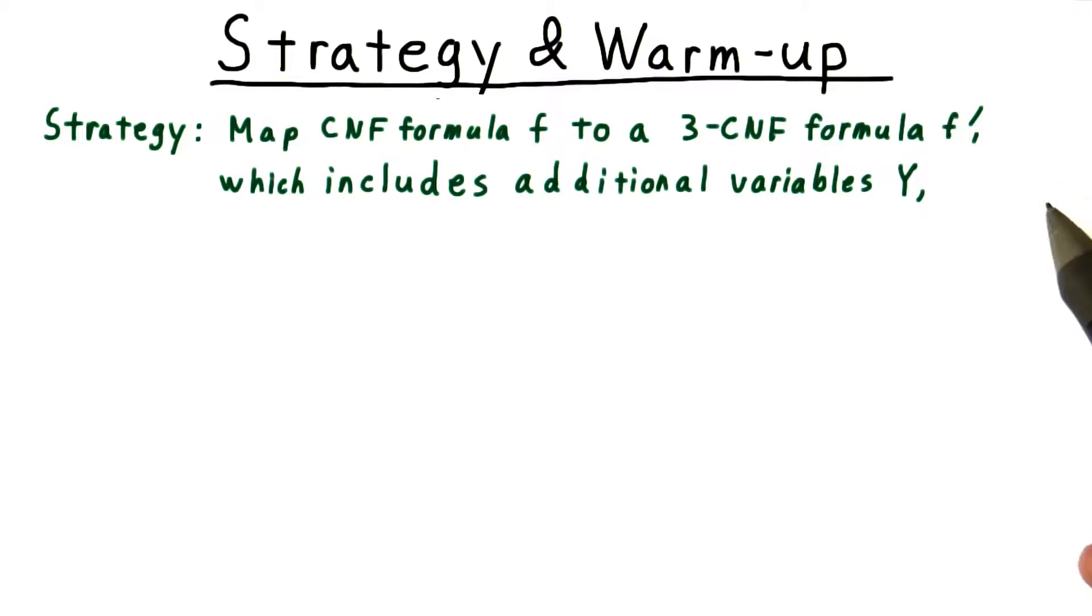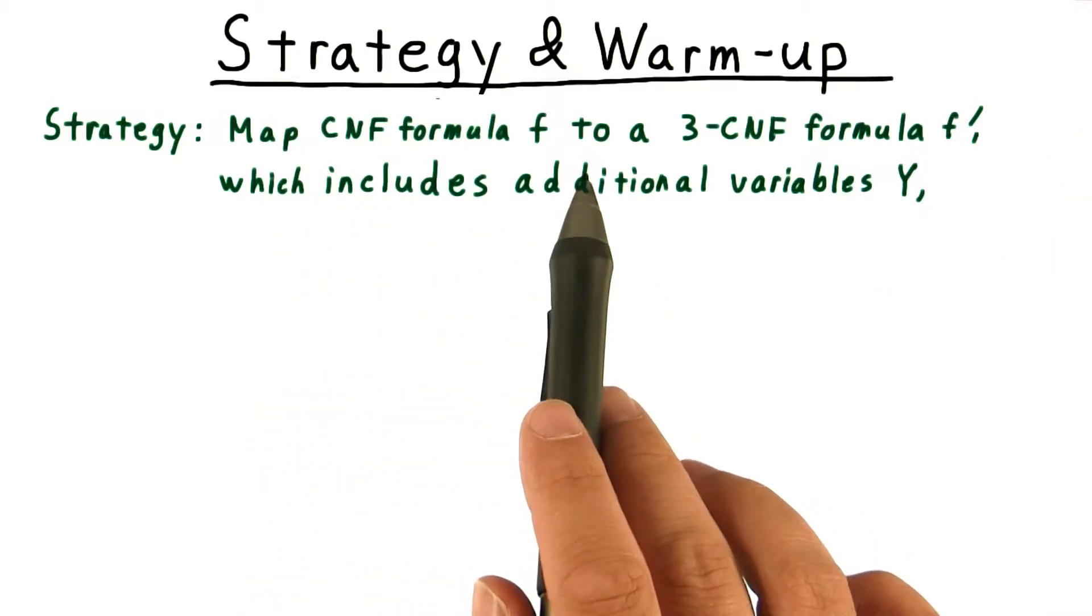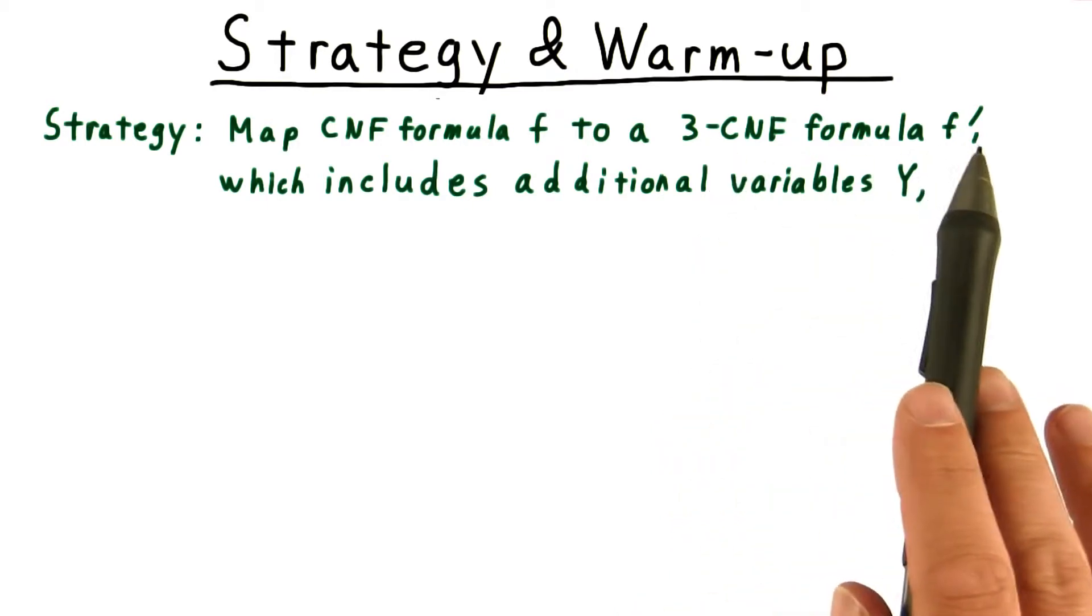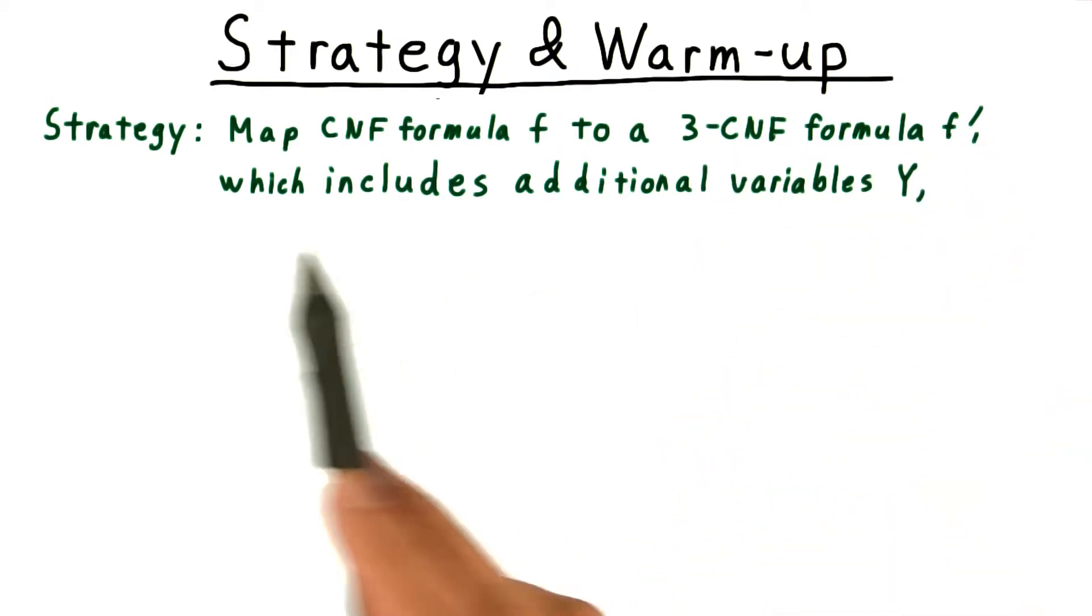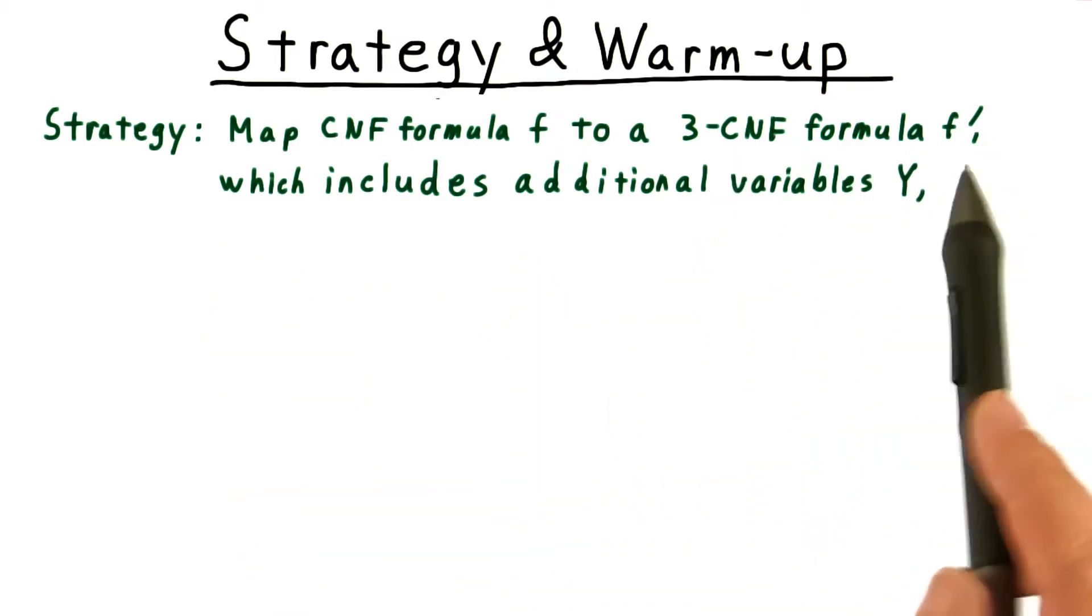Here's our overall strategy. We're going to take a CNF formula f and turn it into a 3-CNF formula f prime, which will include some additional variables, which we'll label y.